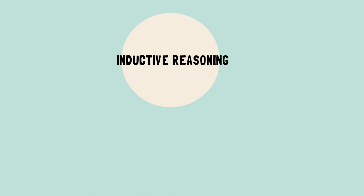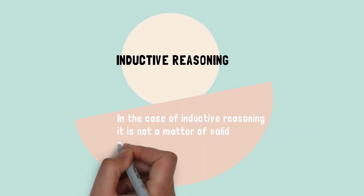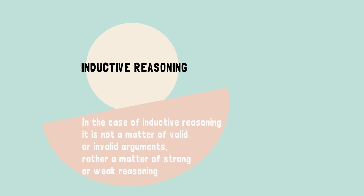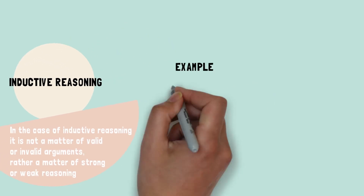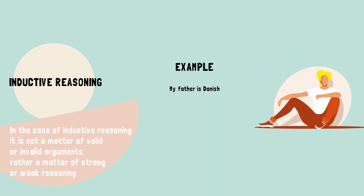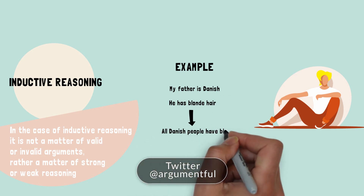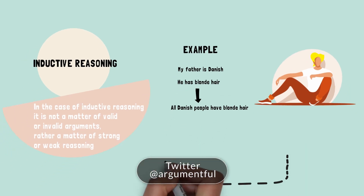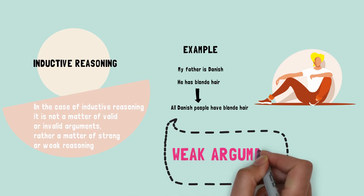By contrast, the conclusion in an inductive reasoning example may or may not be true. So in the case of inductive reasoning, it's not a matter of valid or invalid arguments — rather, a matter of strong or weak reasoning. If I say: my father is Danish and he has blonde hair, therefore all Danish people have blonde hair — this is a rather weak argument. We would need more data to support such a conclusion.